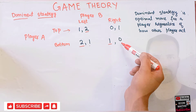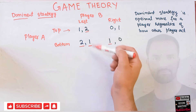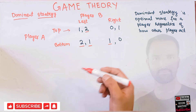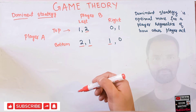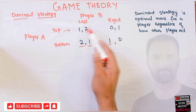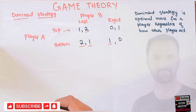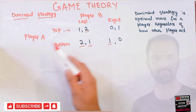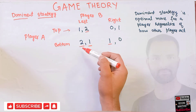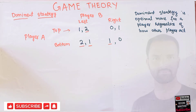Going left gives player B two as payoff and going right gives him only zero payoff. So regardless of what player A does, player B will always choose left. So in this case we say that both players have a dominant strategy. Whatever choice player B makes — either left or right — player A always chooses bottom. Similarly, whatever choice player A makes, player B always chooses left.